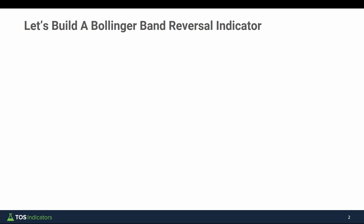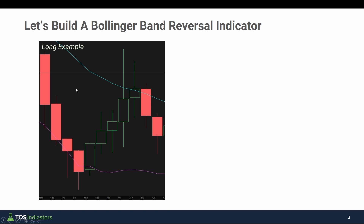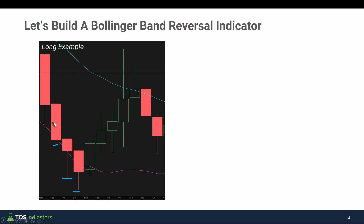Let's take a look at an example to visualize what the setup looks like. Here's a long side trade example. We're looking for price to break outside of the Bollinger Bands — in this case, the lower Bollinger Band. That tells us we're outside of whatever standard deviation threshold you set. The default is a 2 standard deviation threshold. This blue line is the mean, which is just a simple moving average — the default is set to a 20 SMA. For this setup, we need the low to be outside of the Bollinger Bands for a long side setup, then we're looking for the first green candle in which price is closing above the previous candle's high. Very simple Bollinger Bands and price action setup.